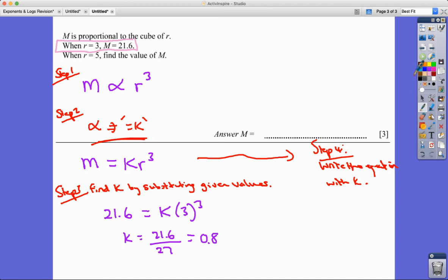So it's M equals, I'll stick to the colors, M equals 0.8 R cubed. And then I just answer the question.